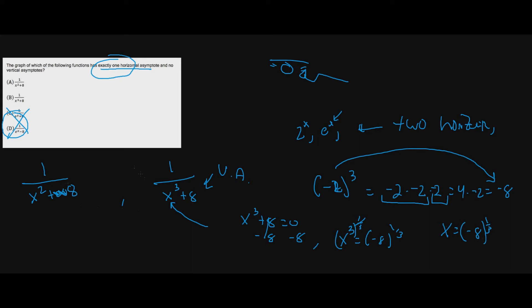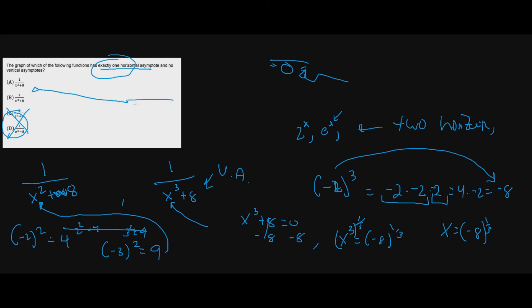When it's an even exponent, we can't get a vertical asymptote. An even exponent always turns any number positive — two squared is four, negative two squared is also four. So plugging anything into an even exponent gives a positive result, and positive plus eight will never equal zero. I can immediately conclude the answer is A — not B because the odd exponent means I can get zero in the denominator, and not C or D because exponential functions give two horizontal asymptotes.